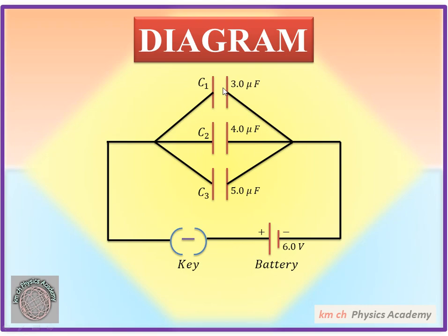We have connected these three capacitors in parallel. We have a 6 volt battery attached to them with a key. When we plug in the key, the battery is connected. This means that the potential difference across each capacitor — C1, C2, and C3 — will be equal to the battery voltage of 6 volts.